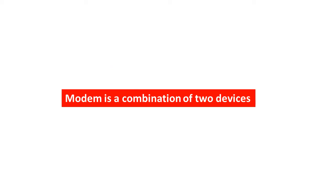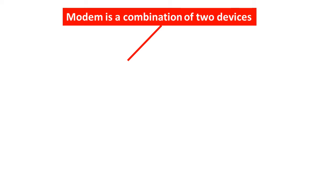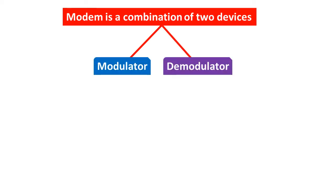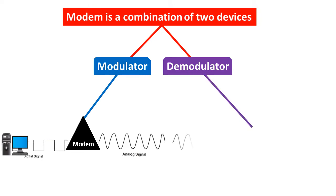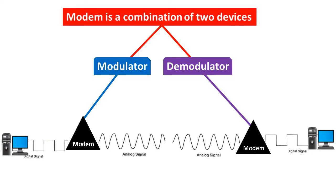A modem is a combination of two devices: one is the modulator and the other is the demodulator. When data is being sent by the computer across the network, the modulator converts digital data into analog data, as only the analog signal can transfer through the telephone line or cable wire. When data is being received, the demodulator converts analog signals into digital data, because our computer understands only digital data.